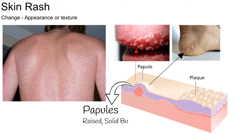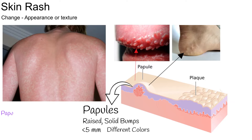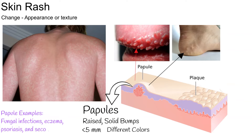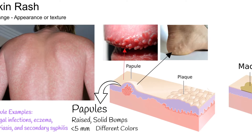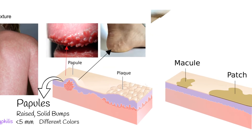Papules are raised, solid lesions — well-defined bumps in the skin with a diameter of less than 5 mm. Papules can be different colors, from flesh colors to blue, red, black, or yellow. Papules can be presented in cases of fungal infections, eczema, psoriasis, and secondary syphilis.